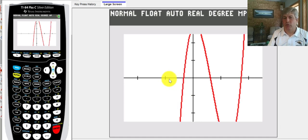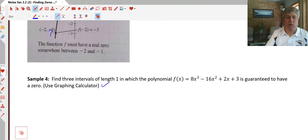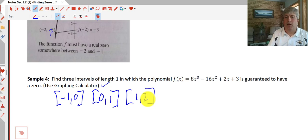So it appears we have zeros between negative one and zero, between zero and one, and between one and two. So we can write that our answer: between negative one and zero, zero and one, and one and two. Three intervals of length one in which the polynomial is guaranteed to have a zero. So we know where our zeros are going to fall within those intervals.